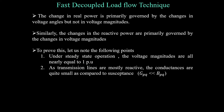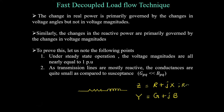The second point is that since transmission lines are mostly reactive, the conductances are quite small compared to the susceptance value. If you see any transmission line, it is predominantly reactive in nature. In impedance form, R is very much less than X. In admittance form, G is very much less than B. That is the condition here, and I have represented the statement as: the conductances of these lines are very much less than the susceptance value.